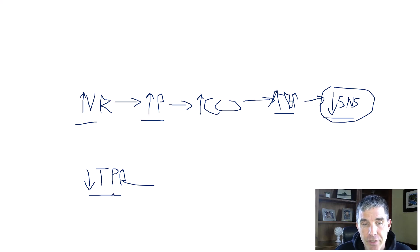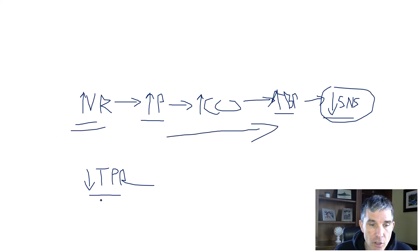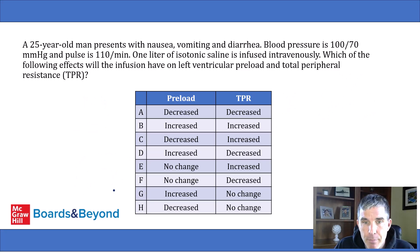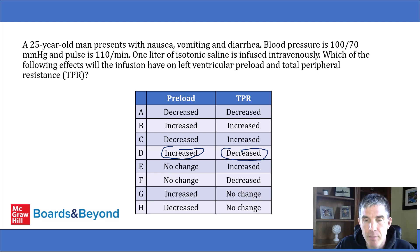That may seem counterintuitive — the TPR falling when the man has low blood pressure — but that's what happens when you infuse normal saline into the body, by this mechanism. All those other effects of the sympathetic nervous system — effects on heart rate, effects on left ventricular contractility — are also going to reverse because you have less sympathetic activity. So: preload is increased, TPR is decreased, because the preload is going up, cardiac output is going up, there's less sympathetic activity, and the TPR falls.